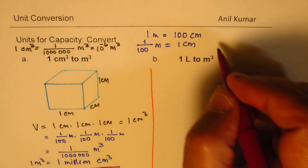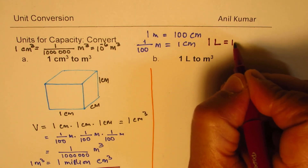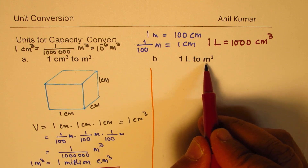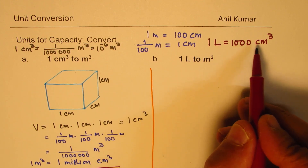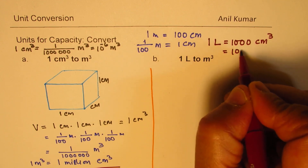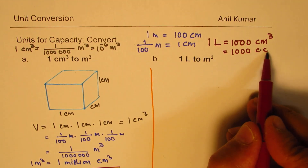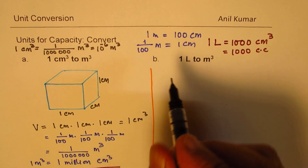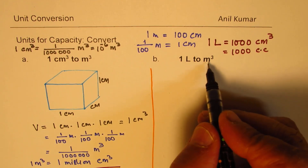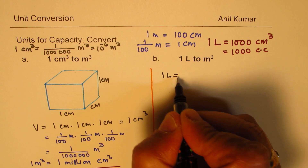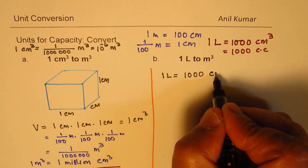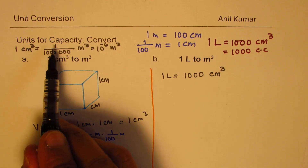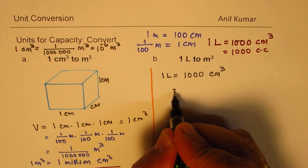Now let's look at the conversion of liter to meter cube. You should know that one liter is equal to one thousand centimeter cube — we use the term one thousand cc, where cc means centimeter cube. So one liter really means one thousand centimeter cube.